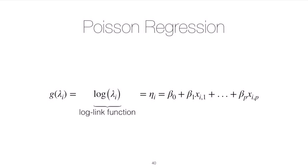In the last lesson we learned that we can estimate the parameters beta that show up in the linear predictor using maximum likelihood. The likelihood was constructed using the canonical link function, the log link. We set the linear predictor equal to the log of the mean of the distribution, and the mean of the Poisson distribution is the rate parameter lambda.